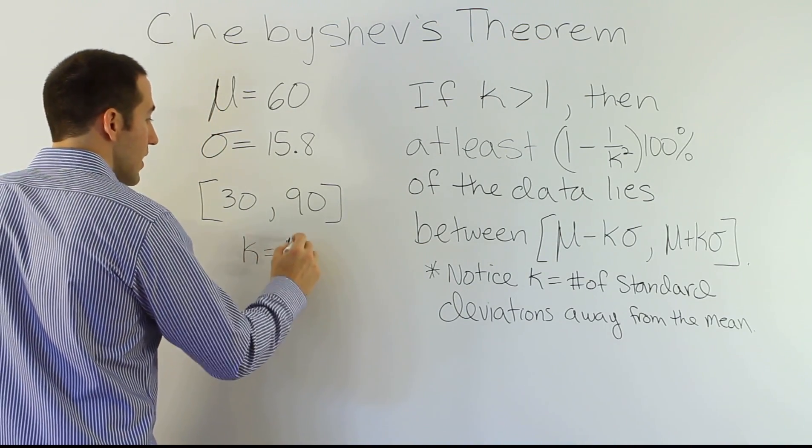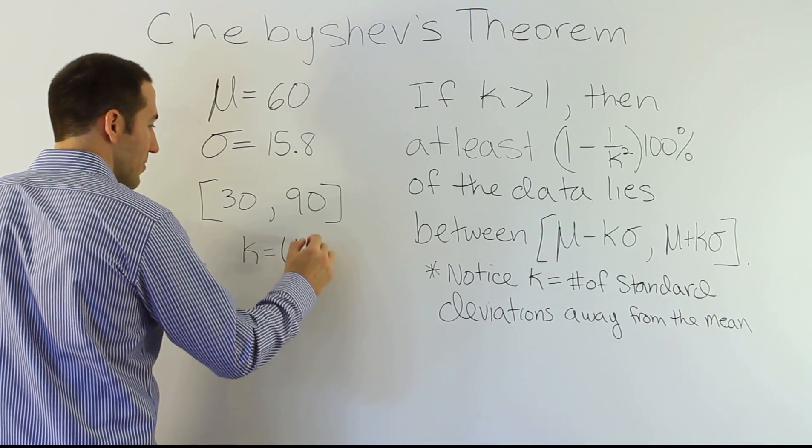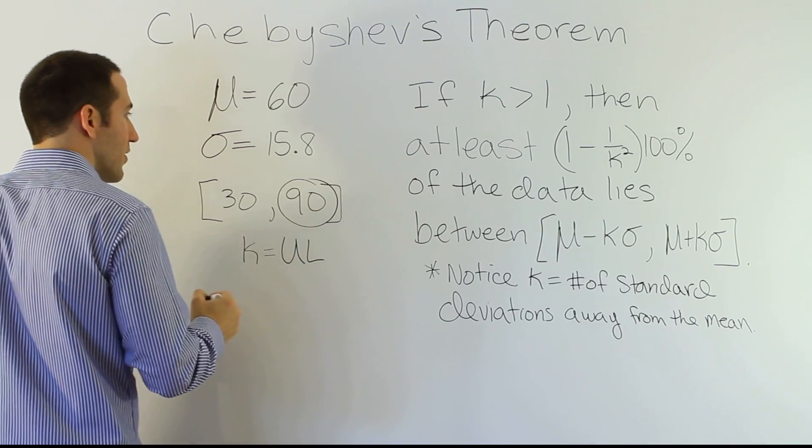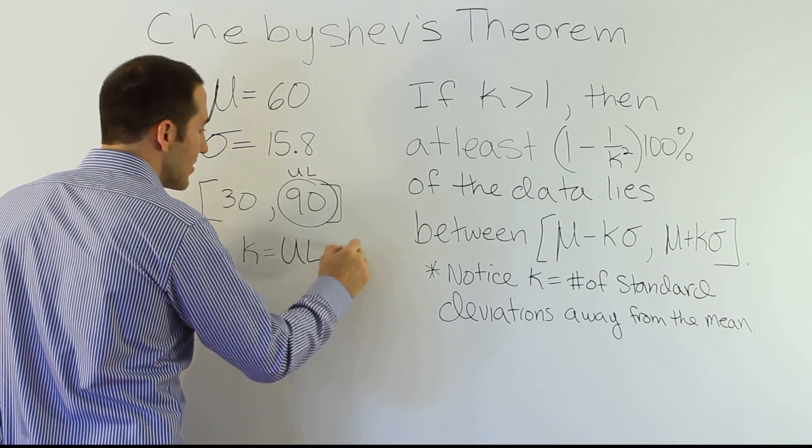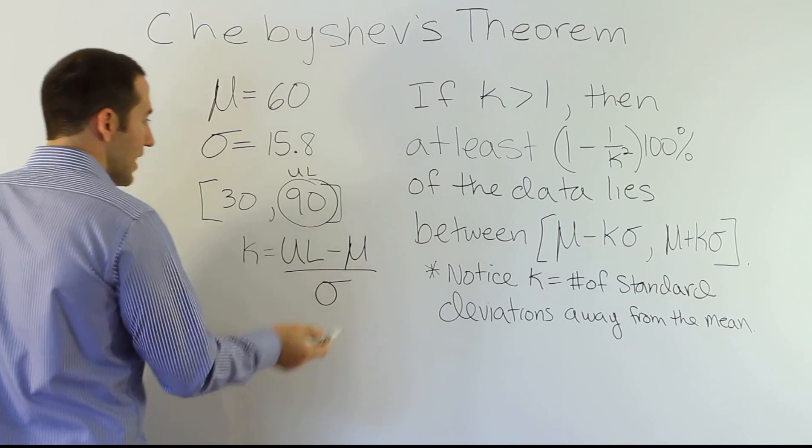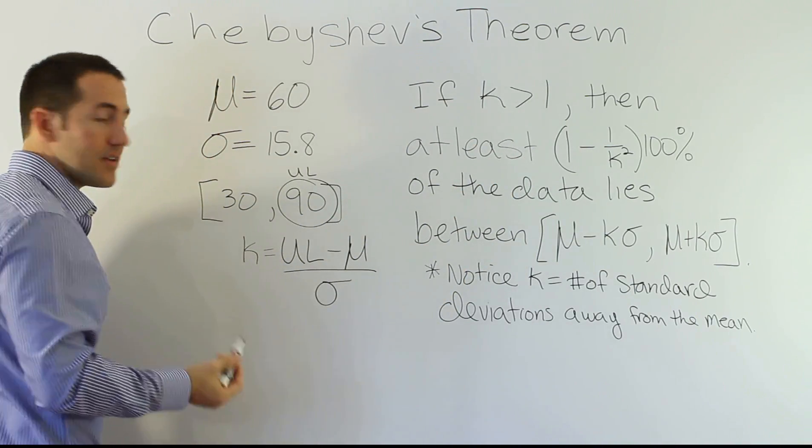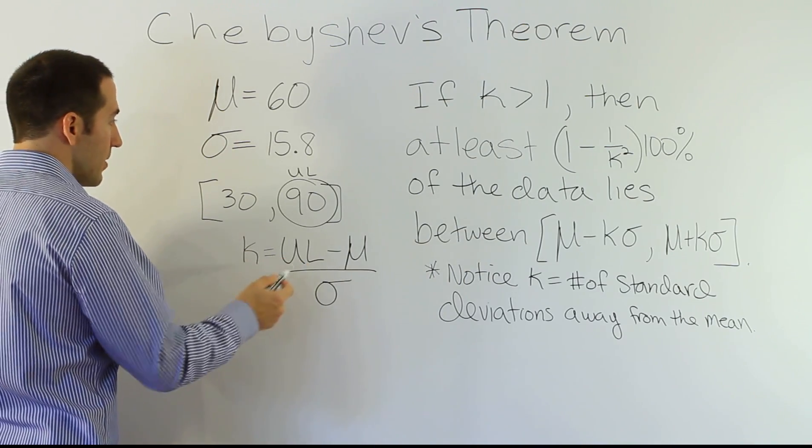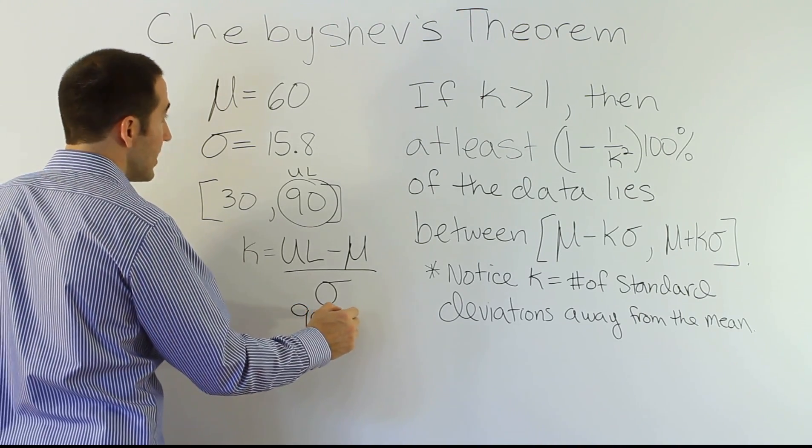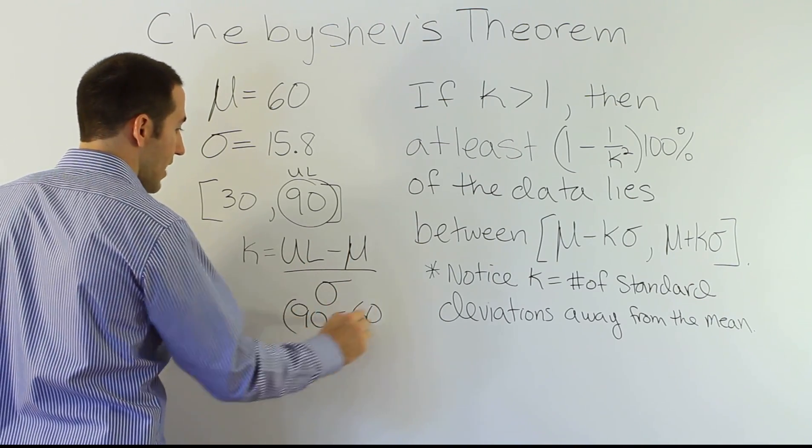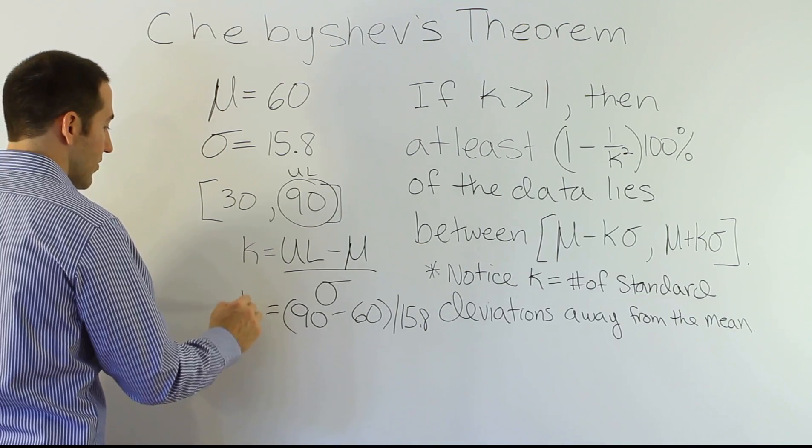Alright, the way we can figure this out is pretty simple. We're going to use a formula called k, where k is equal to the upper limit. Sorry to write that u as a mu symbol. Upper limit. So, upper limit is going to be this number in the interval. So, I'm going to call that my upper limit. In other words, the number in the interval at the top of the interval, minus the mean over the standard deviation. If you plug that information into this formula, you will come up with a k that Chebyshev's theorem is talking about. So, let's do that then. We'll plug in the upper limit, which is 90, minus the mean, which is 60, divided by 15.8. So, I'll have 90 minus the mean of 60, all of that divided by 15.8.